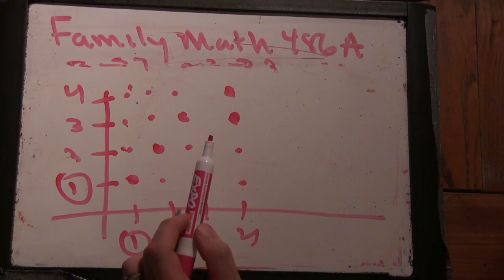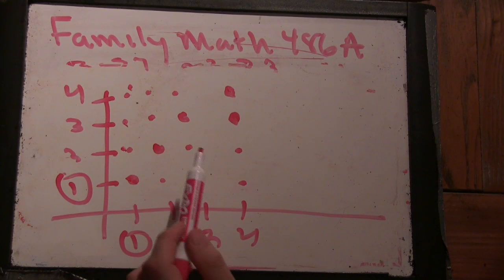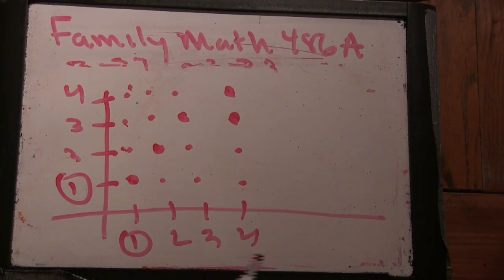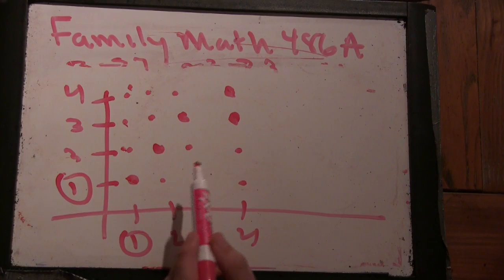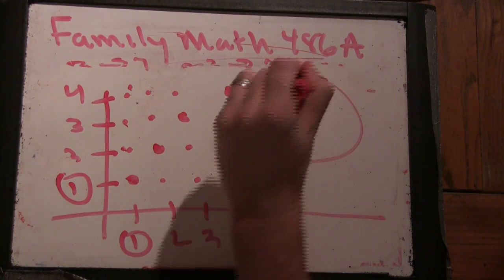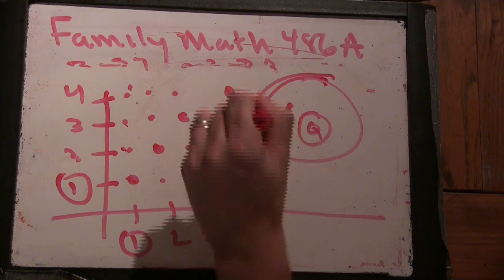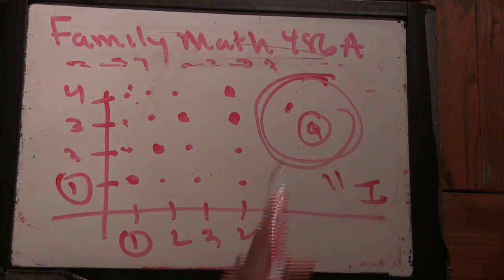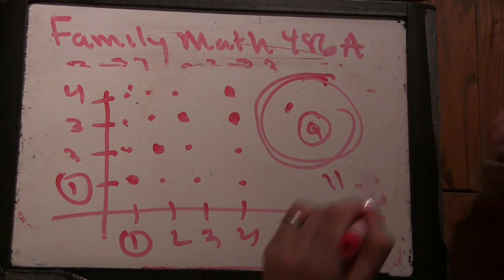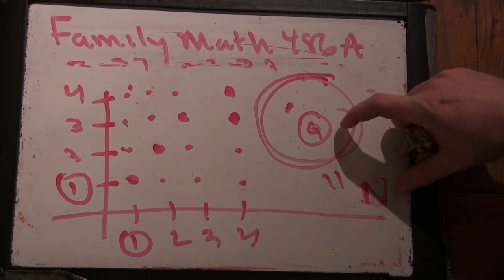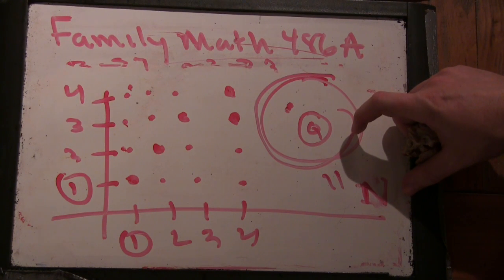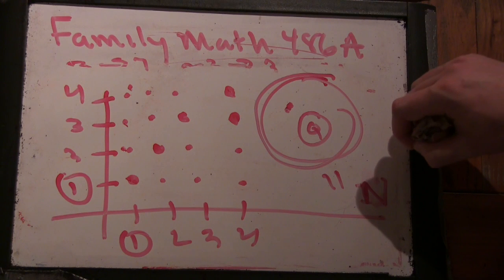I'm counting something bigger than the rational numbers, and if I can show that the thing bigger than the rational numbers is the same as the integers, and the rational numbers can't be smaller than the integers, that must mean they're equal. Here are my rational numbers Q, and here's what I'm counting — it's bigger than the rational numbers. I'll show this bigger thing is equal to the natural numbers, so the rational numbers would have to be equal.